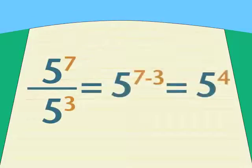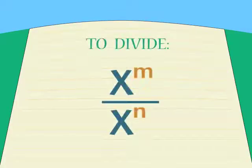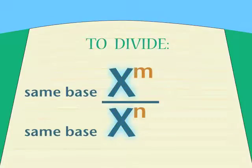Is there a shortcut without all that counting and canceling of fives? There is, and it's just the opposite of what we did to multiply. So what do you think the rule would be? To divide powers with the same base, you do what?